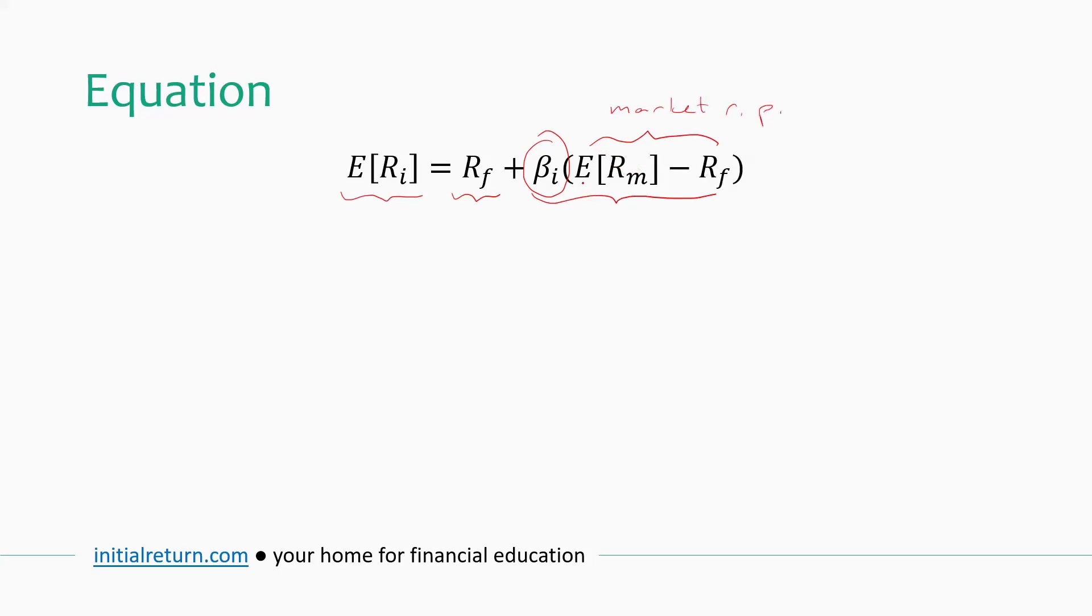What we have here, so this first term here, is the expected return on the market portfolio. And this is the risk-free rate. So this is what the market earns in excess of the risk-free rate. So for example, if the risk-free return is 3%, and if the market portfolio is expected to generate 8%, market risk premium is 5%.